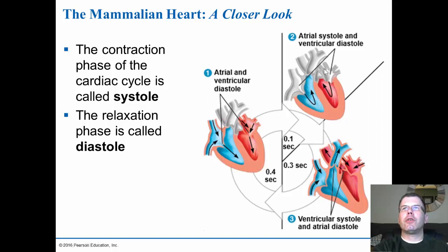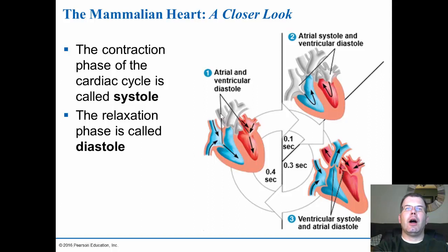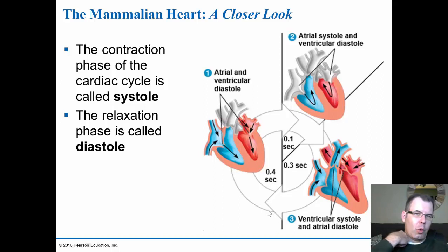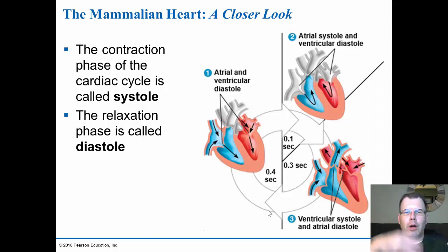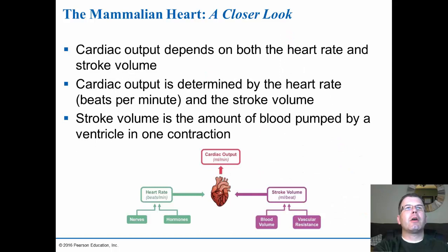During the first part of the cycle you have atrial systole pumping blood into the ventricle — about one second. Then in the second part you have atrial diastole and ventricular systole where it squeezes blood through. Then you have both chambers refilling in atrial and ventricular diastole — about four seconds. Typically a heartbeat is every five to seven seconds, and that's going to be your pulse rate. The more fit you are and the more efficient your heart is, the slower your heartbeat.